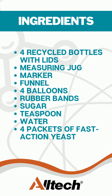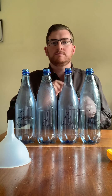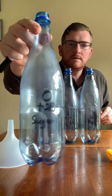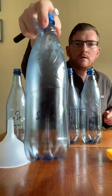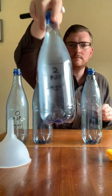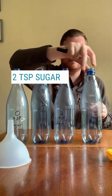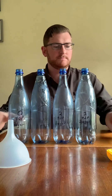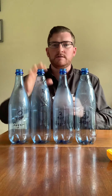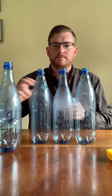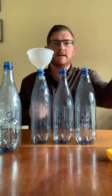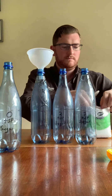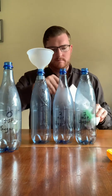So for our experiment today, what we are going to need is the following. Each bottle we're going to put a different quantity of sugar into. I've labeled each of my bottles here: zero teaspoons of sugar, one teaspoon of sugar, two teaspoons of sugar, and three teaspoons of sugar. So we can go ahead now and add the sugar to each of the bottles. We can use our funnel to help us with this. In the first bottle we're going to have no sugar, and in the second bottle we're going to add one teaspoon.